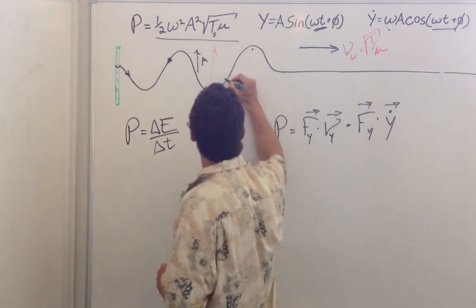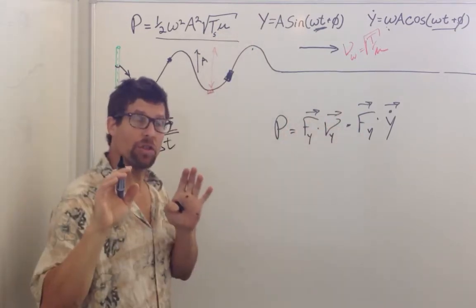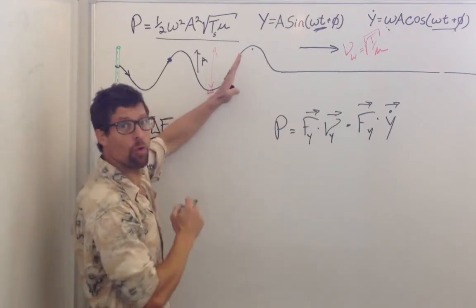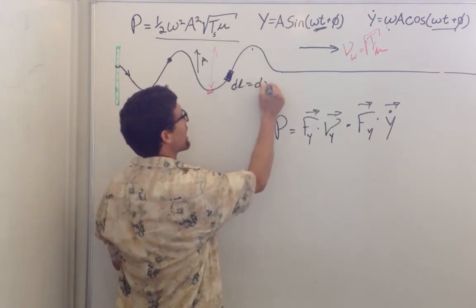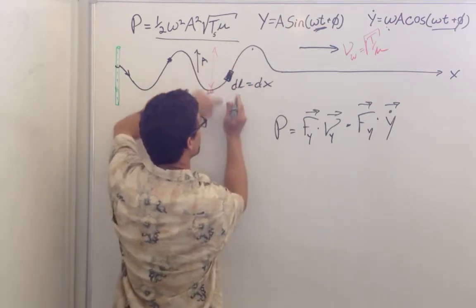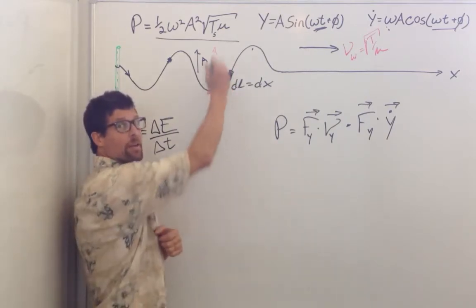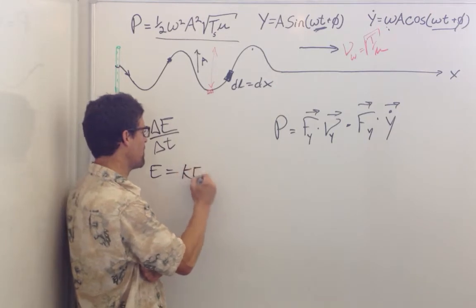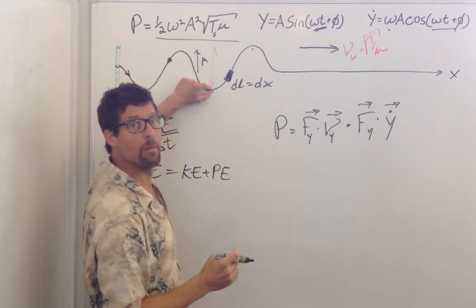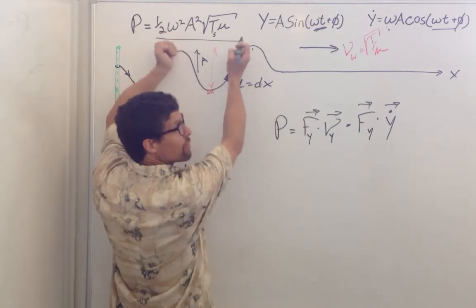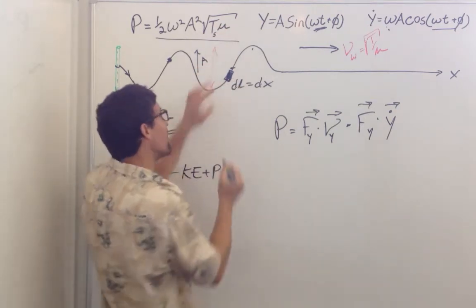Let's take a chunk of string and find what its energy is as it oscillates up and down as the wave goes by. We're going to use the small angle approximation: the angle is very small, so dl equals dx — the little bit of length of string equals the little bit of delta x on the string. The energy of an oscillator as it moves up and down equals kinetic energy plus potential energy, and it transitions between the two. At the peak, the particle only has potential energy; at equilibrium, it's all kinetic energy; in the middle, it's the sum.